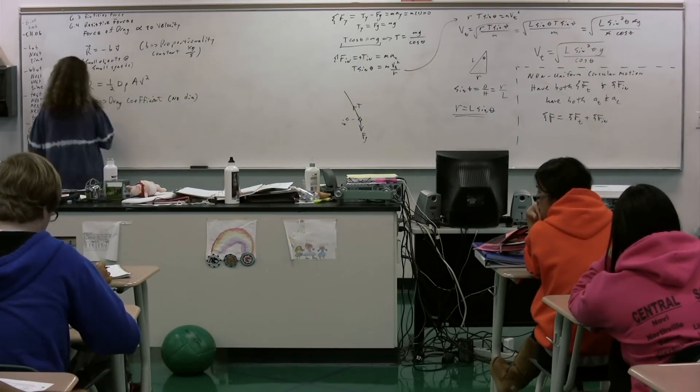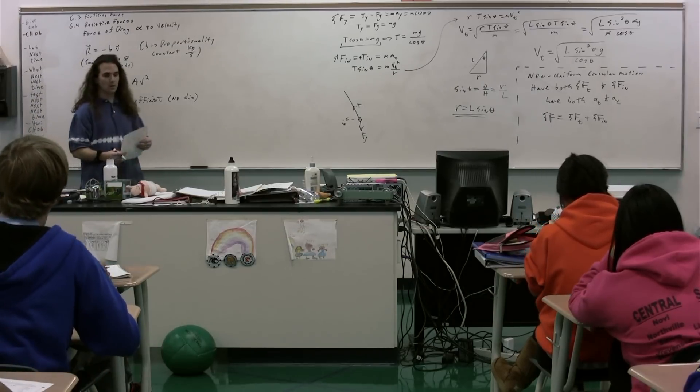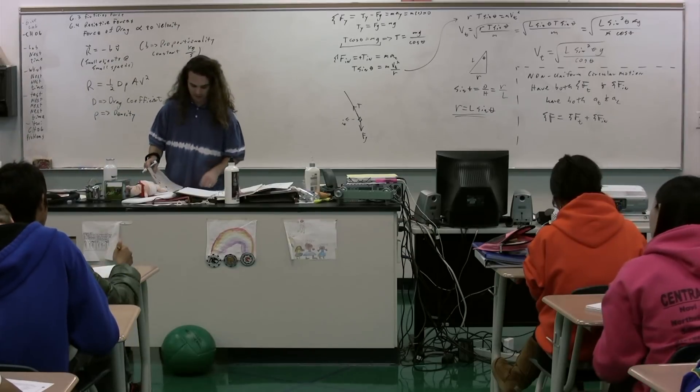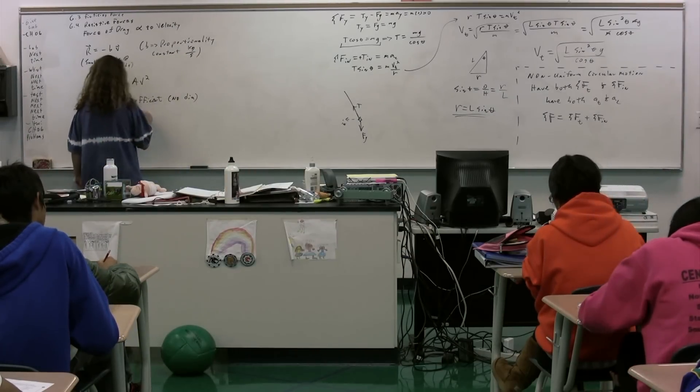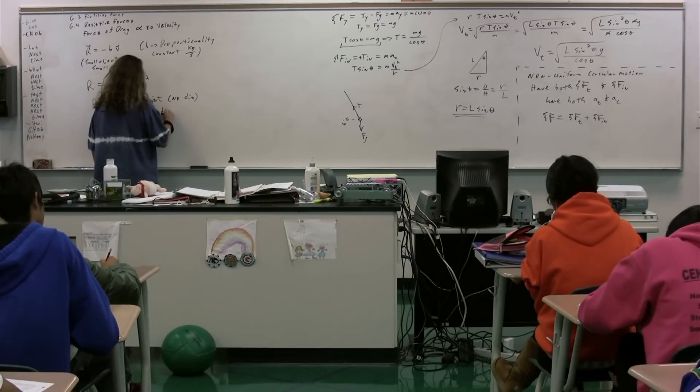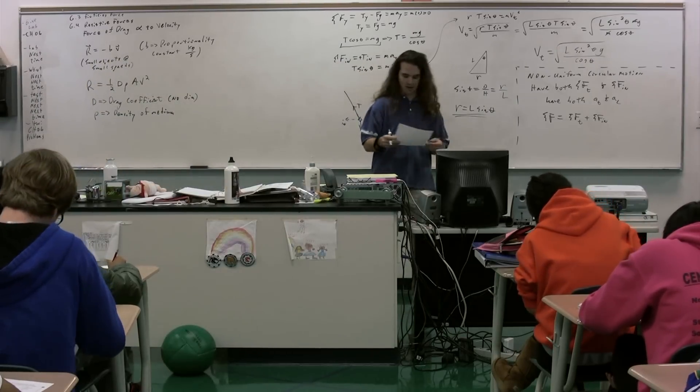Rho is the density of whatever the object is going through. It's the density of the medium. No, it's not the density of the object itself. It's the density of the medium through which the object is moving.